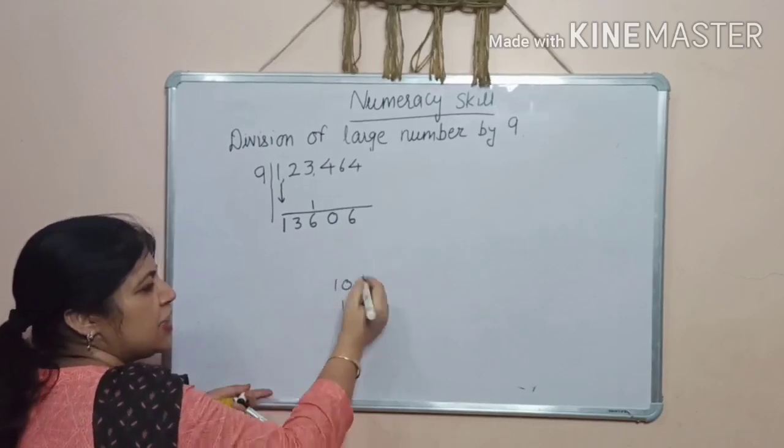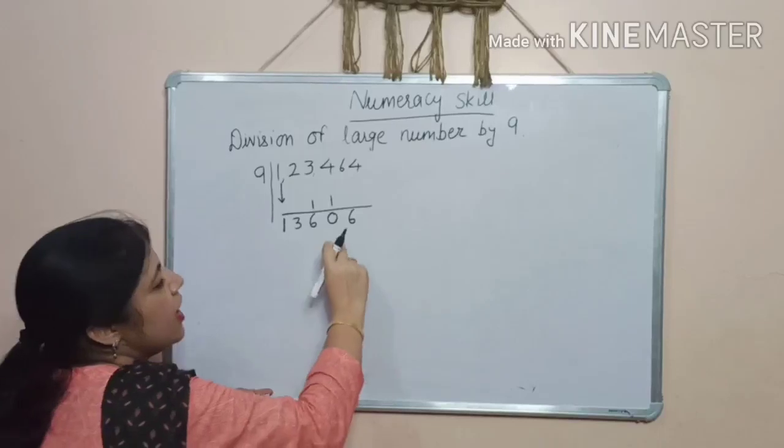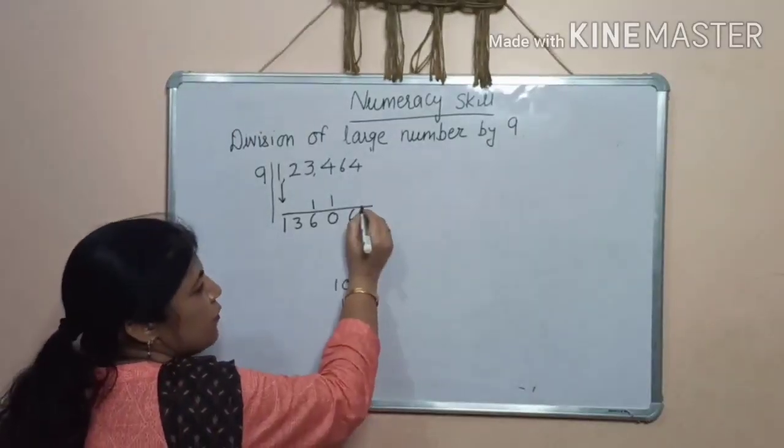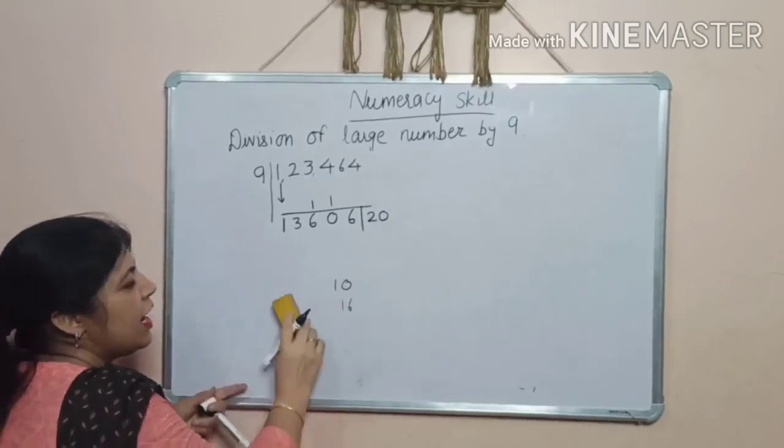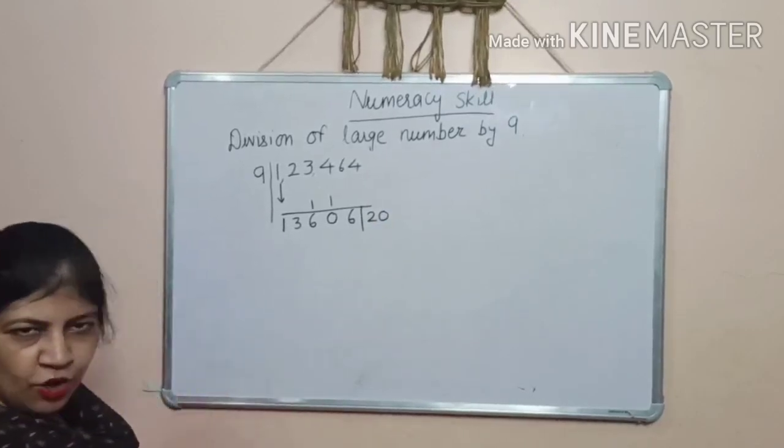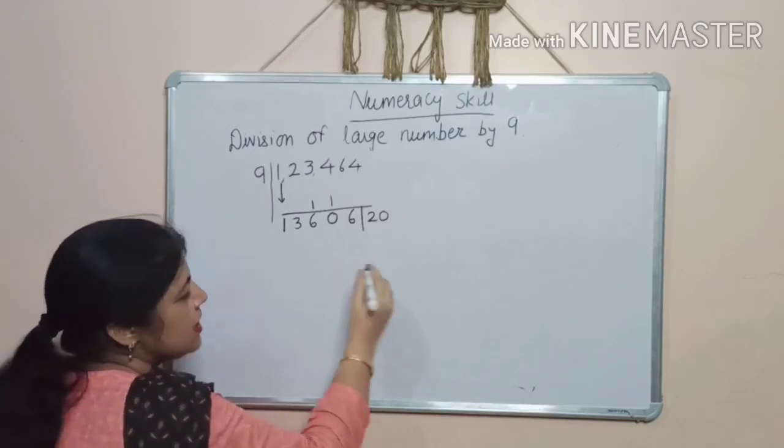You will get 16. We will write 6 here and 1 will be here. And now, 16 plus 4. 20. And put the stock here. Now,